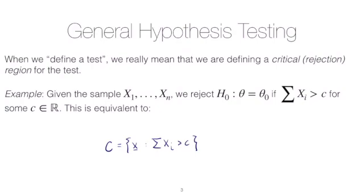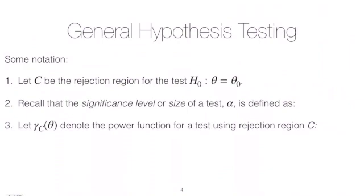And in the latter case, when the sum is less than or equal to, you would fail to reject the null. So we would reject the null hypothesis if our data that we actually collected was in c. So just some notation, we let c be the rejection region for our test of a particular null hypothesis.